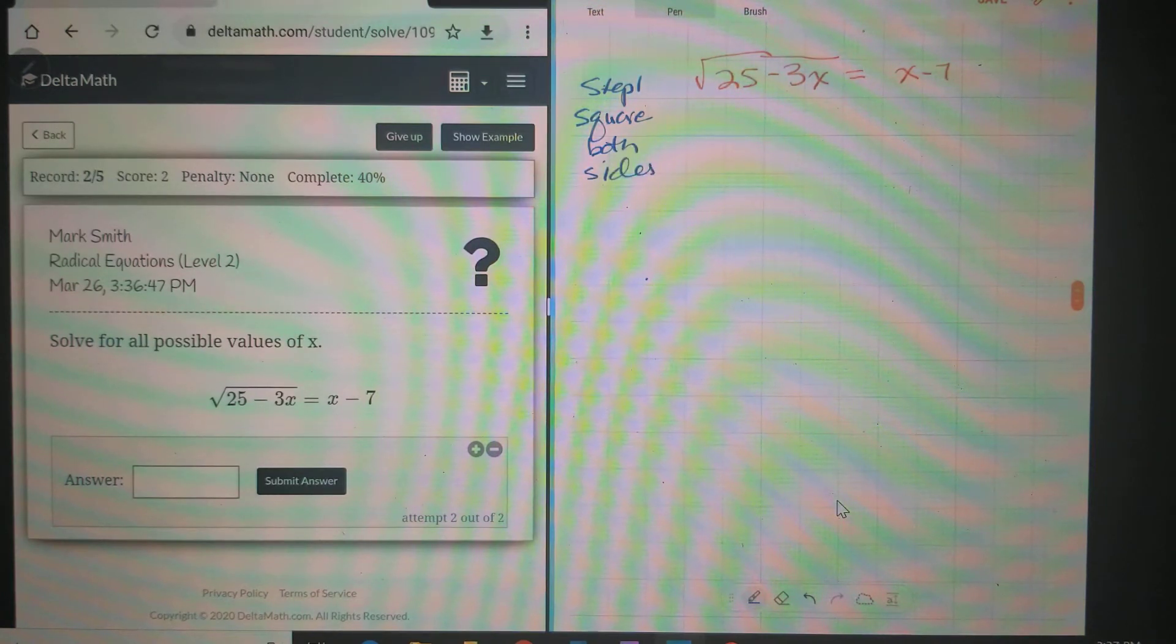I'm just going to put brackets around this whole thing and square it, and brackets around here and square it. Well, this one's pretty easy - it just removes the radical, so that's going to be 25 - 3x. That was simple enough.